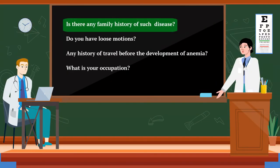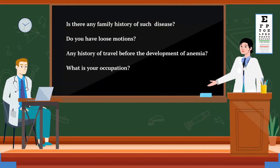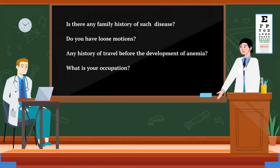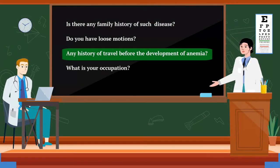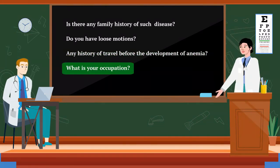Is there any family history of such disease? Do you have loose motions? Any history of travel before the development of anemia? What is your occupation?